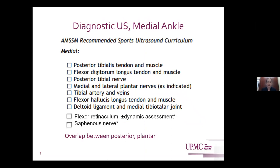This is AMSSM's checklist for the recommended complete examination of the medial ankle, starting with the posterior tibialis tendon and muscle, flexor digitorum longus tendon and muscle, the tibial nerve and its branches, the tibial artery and veins, flexor hallucis longus tendon, the deltoid ligament, and the medial tibiotalar joint. You can also include the flexor retinaculum with or without a dynamic assessment involving resisted inversion, and you can also evaluate the saphenous nerve. In the ankle and foot, structures often overlap, so you may need to scan posterior or plantar regions to cover things on your differential.